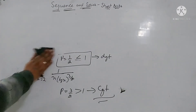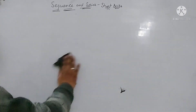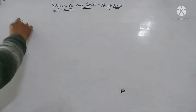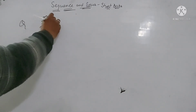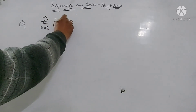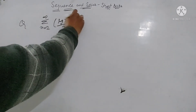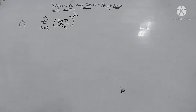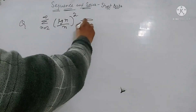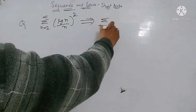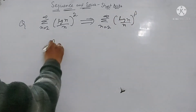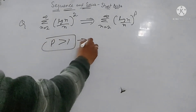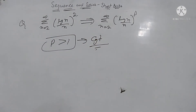Next question: summation n varies from 2 to infinity of log n upon n raised to power 2. Comparing to the standard form log n upon n^P, here P is 2, which is greater than 1. Therefore this series is convergent.